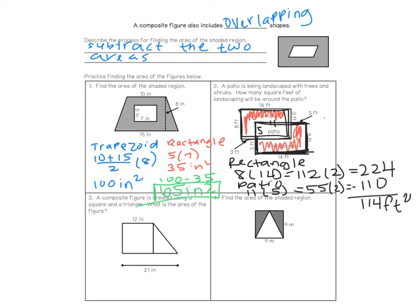Problem three says a composite figure is created using a square and a triangle — what is the area? Since it's a square, all sides are the same. The top part is 12, so the height is also 12. Twelve times 12 gives us an area of 144 for the square.